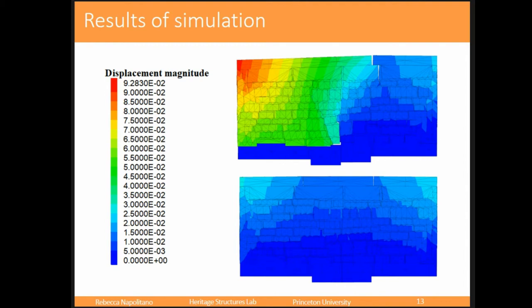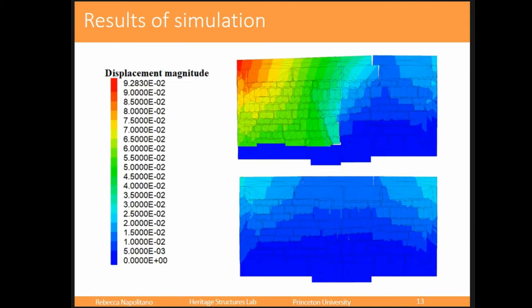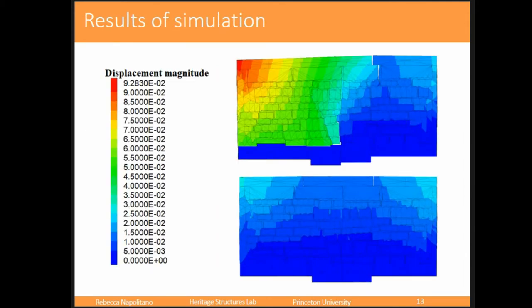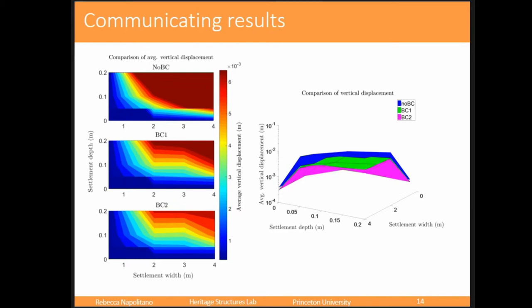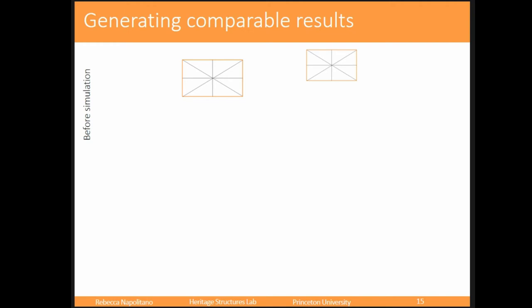But these displacement plots weren't going to help us — we're looking for cracks. We'd have to say, 'I guess this moves a little bit more than this, so maybe they separate, so maybe a crack is forming there,' but that qualitative approach wasn't going to get us very far. Some people also reduce it down to the average displacement of the whole wall and compare those, which also wasn't what we were looking for. We needed a way of generating comparable results to identify where cracks are forming under all these different loads, with the goal of understanding what happened and how best to preserve the structure.